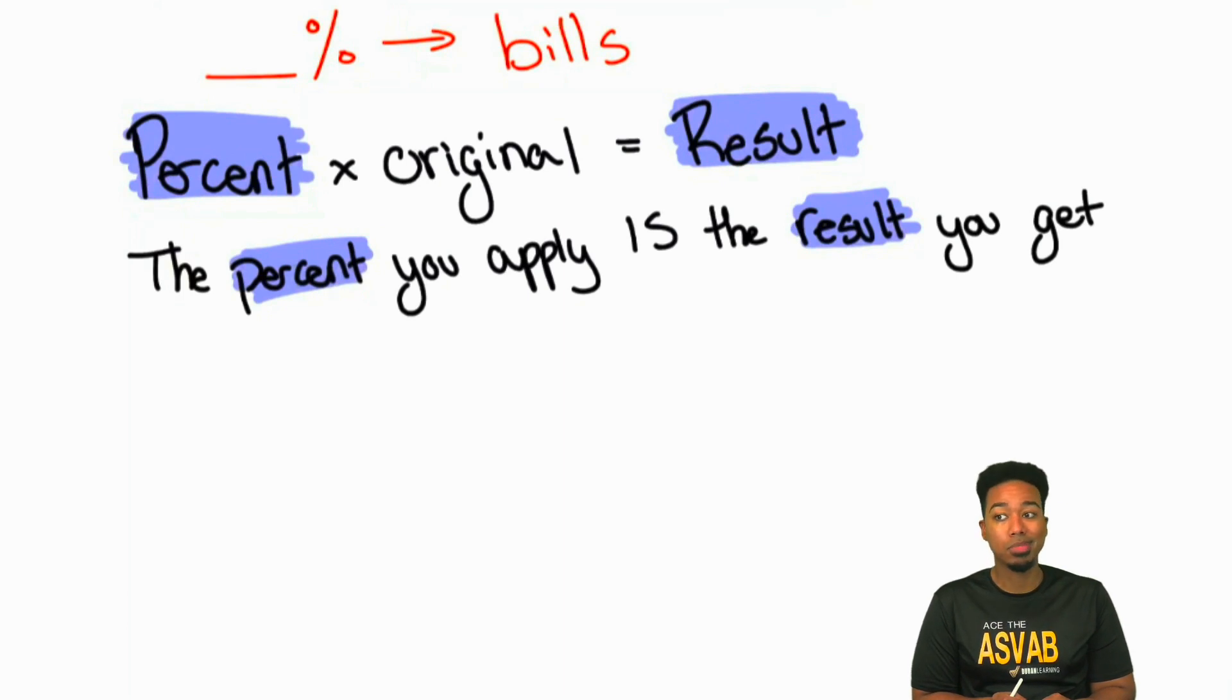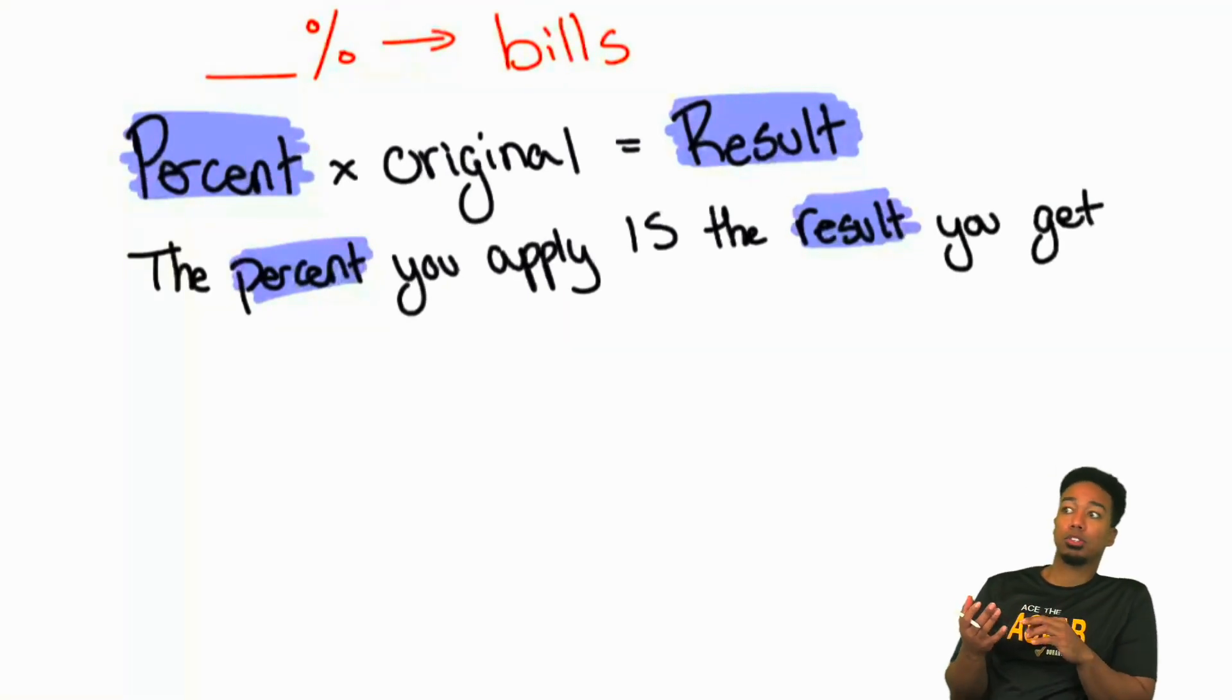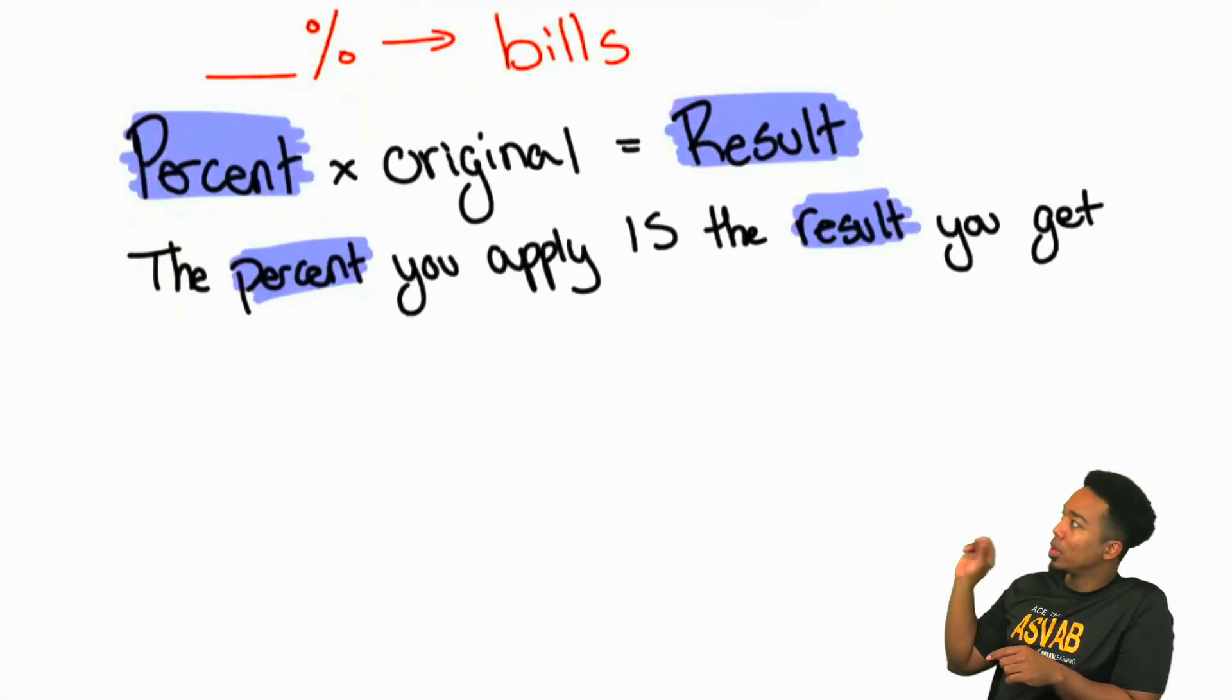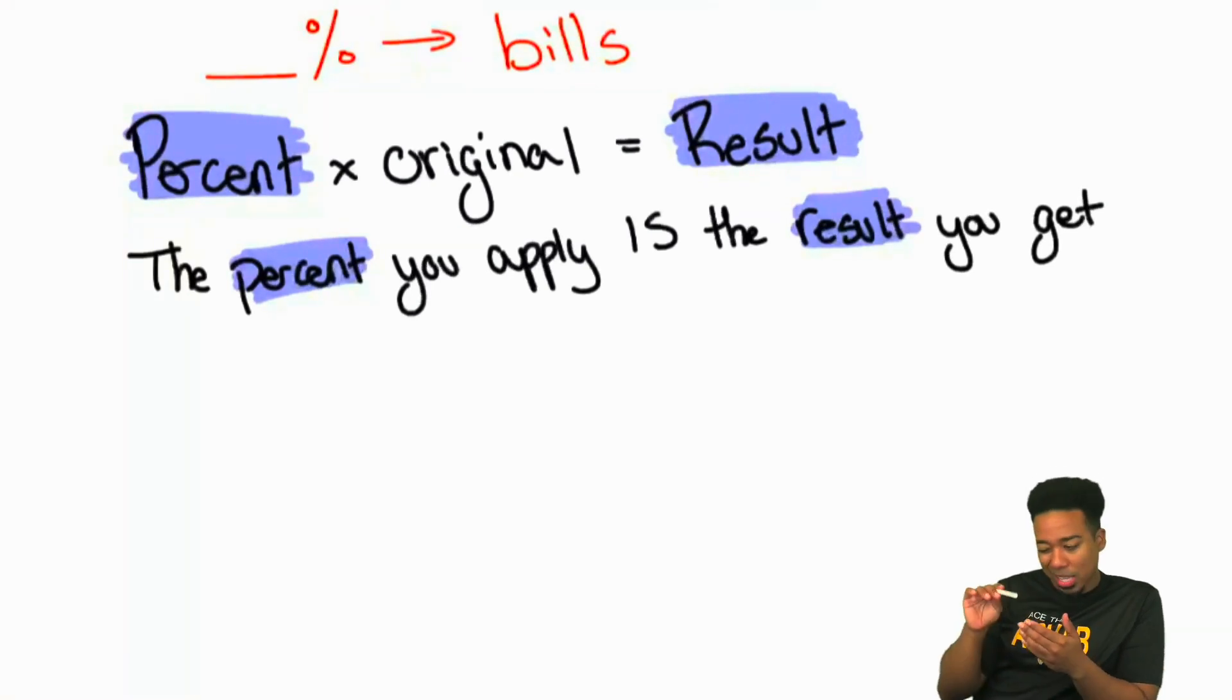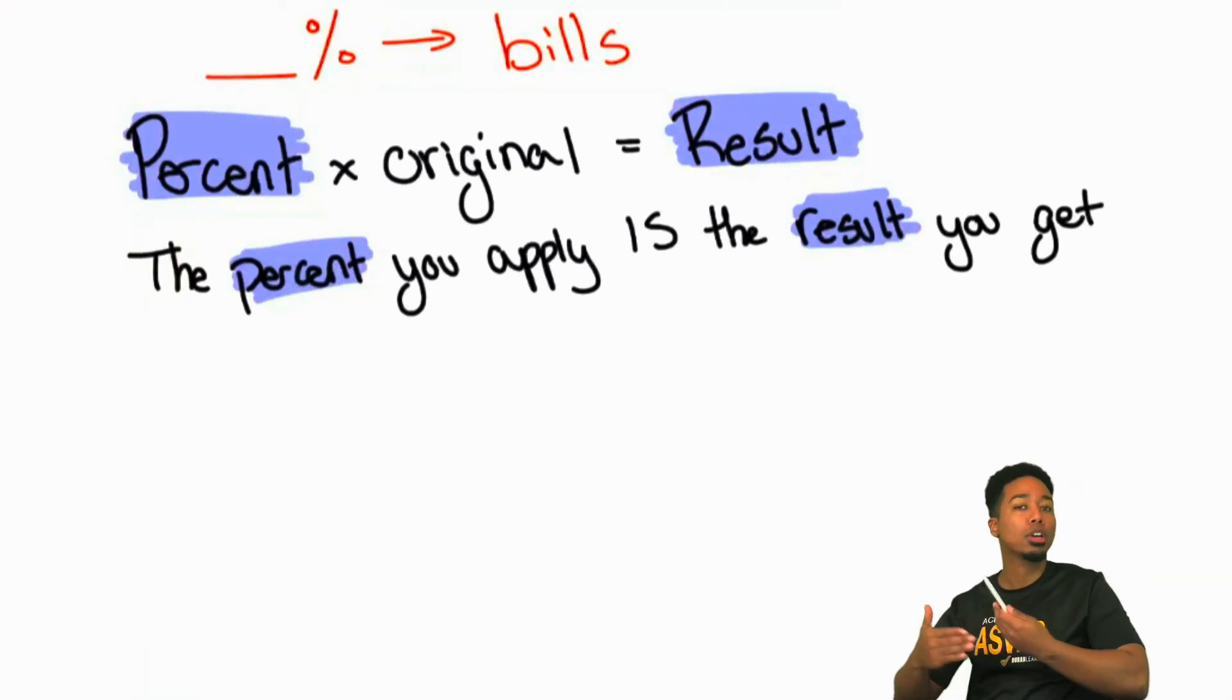So Nikaela, yeah, essentially this can be applied. There's a shortcut to it, but you can apply this when it comes to simple and compound interest, taxes and discounts. Every single percentage problem on the ASVAB will use that formula. When you're learning simple and compound interest, slightly more advanced topics, this still applies, but there's a shortcut that you can use and it's a different formula that saves you time. But to answer your question simply, yes, every percentage question that you're going to be dealing with is an iteration of this simple formula.